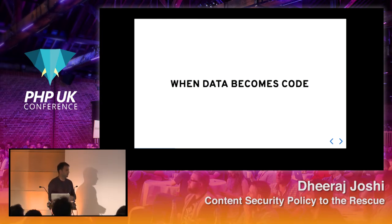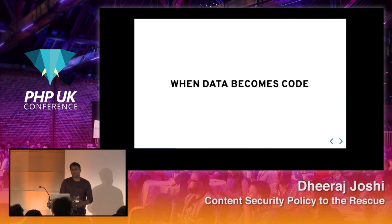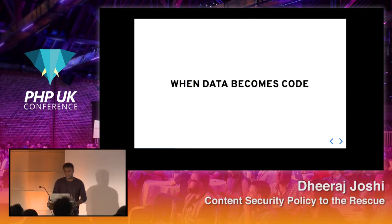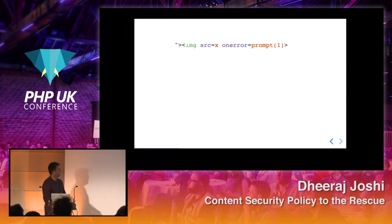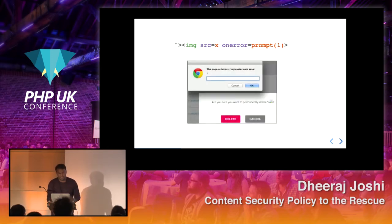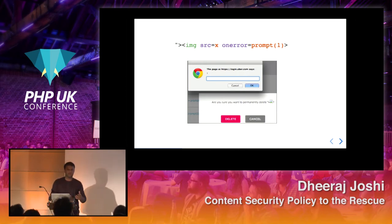XSS is the vulnerability that occurs when your data becomes code, or your code becomes data — mostly data coming from an attacker with bad intentions. For example, a little script loading an image that doesn't exist and using an onerror attribute to show a pop-up. This little pop-up was shown on uber.com, and I reported this vulnerability a couple of years back, where I set my name as a piece of malicious code.